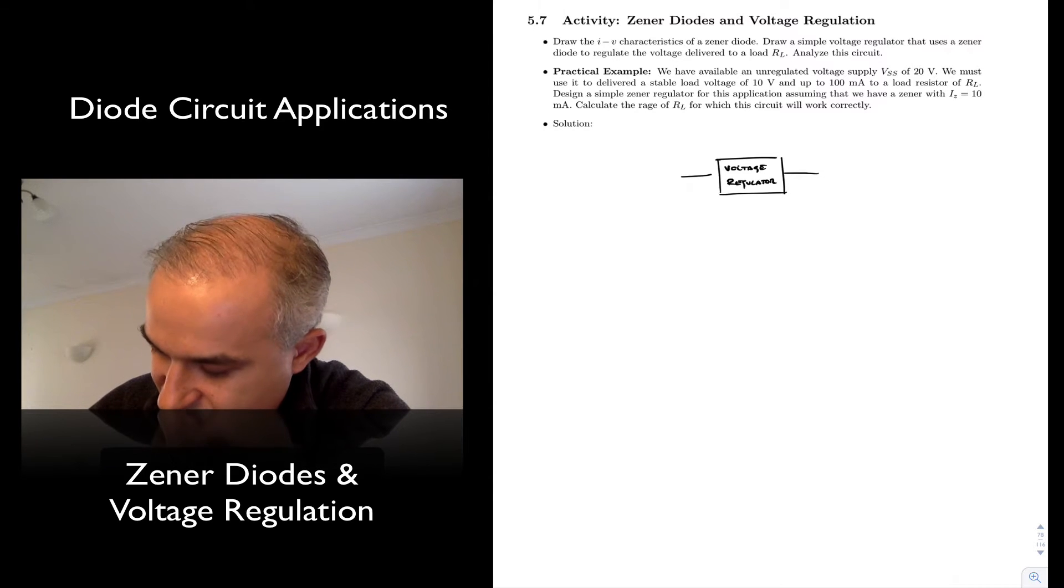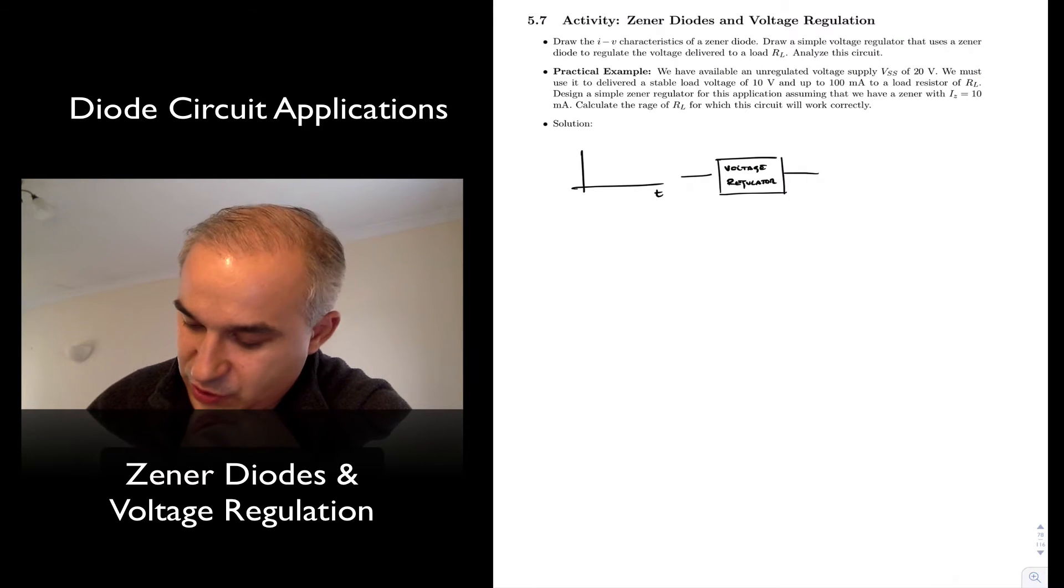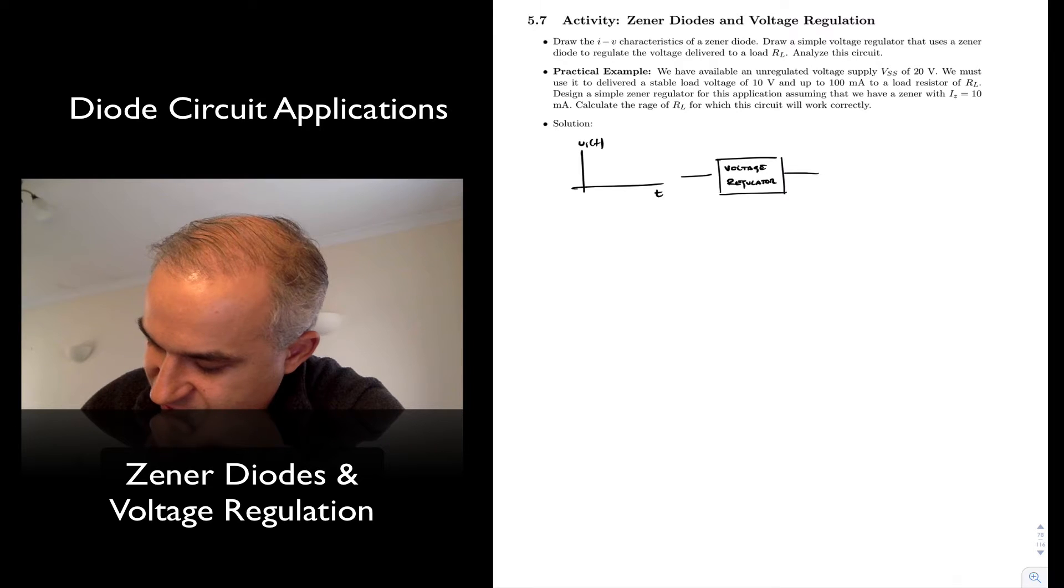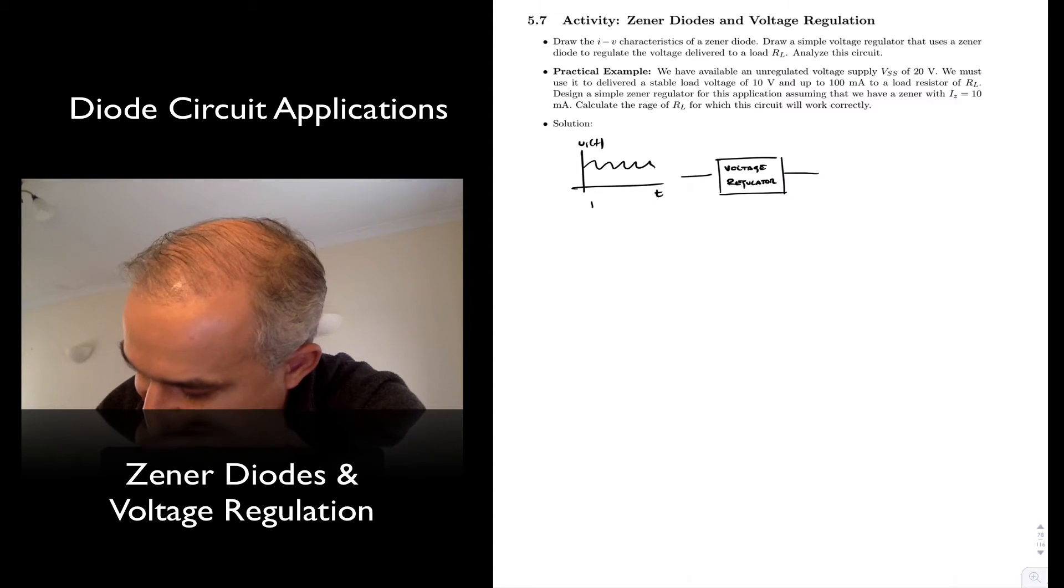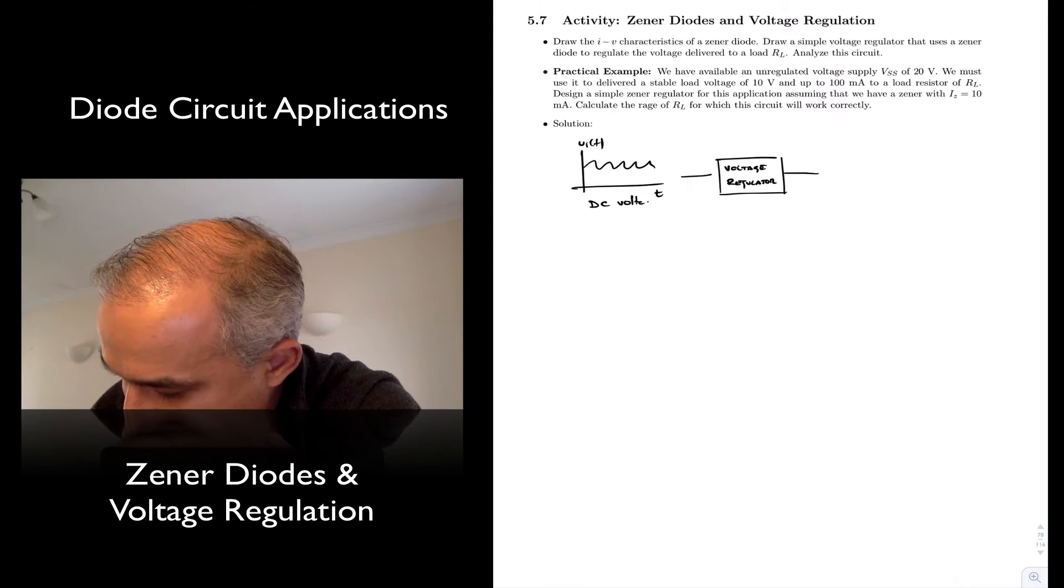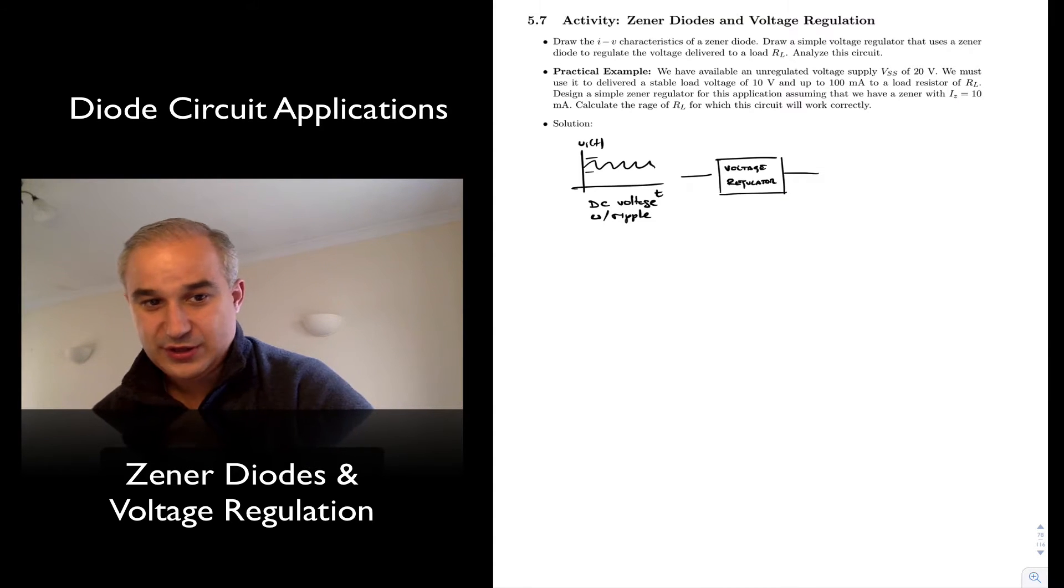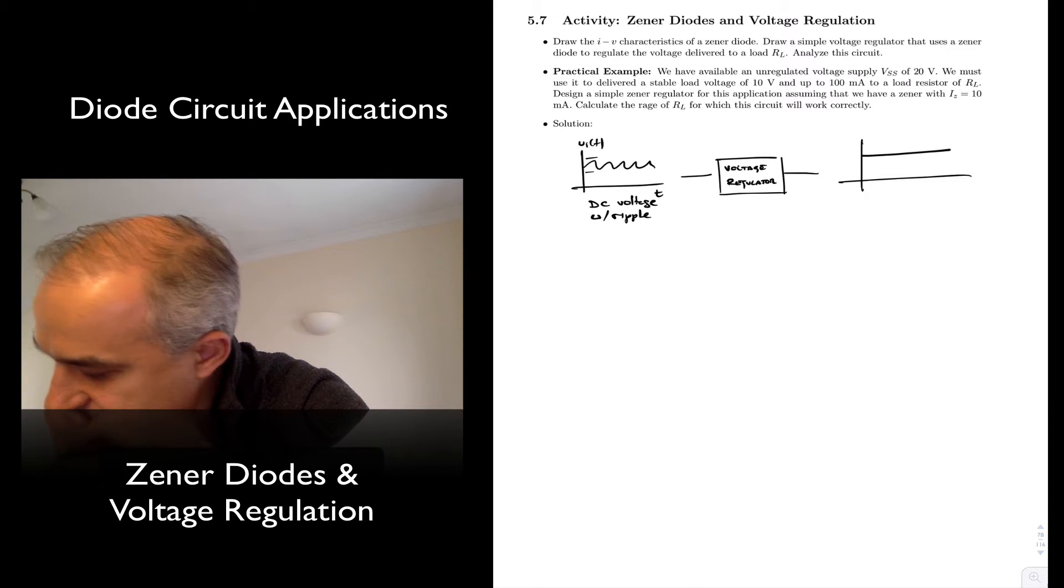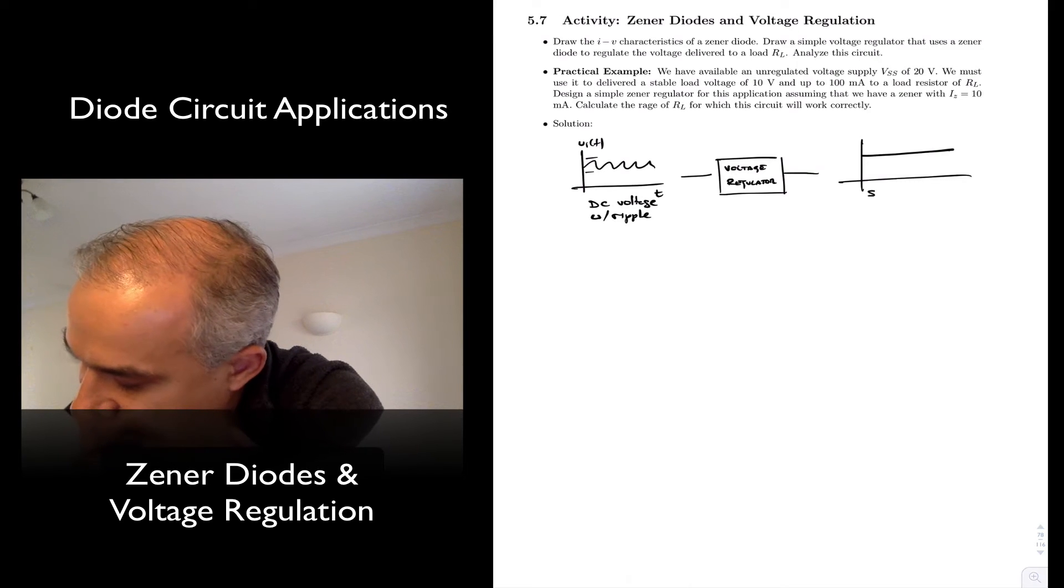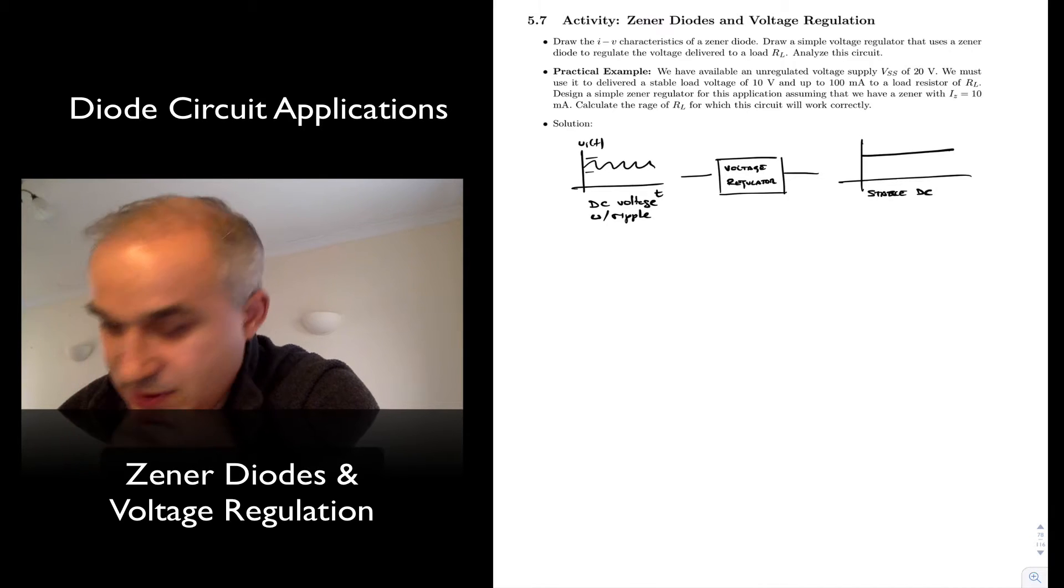If my input is, this is time, I'm going to call this input voltage. It's a voltage with a ripple, something like that. Imagine a DC voltage with ripple, with variations. And that's something that you cannot tolerate in your circuit. And what you want is something like this, a stable DC voltage.